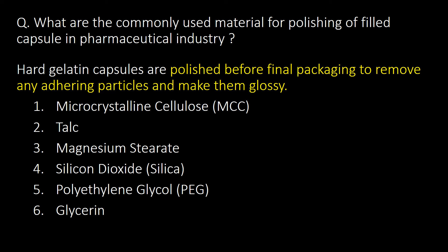What are the commonly used materials for polishing of filled capsules in the pharmaceutical industry? Hard gelatin capsules are polished before final packaging to remove any adhering particles and make them glossy. The six very commonly used materials for polishing are MCC (microcrystalline cellulose), talc, magnesium stearate, silicon dioxide, PEG (polyethylene glycol), and glycerin.